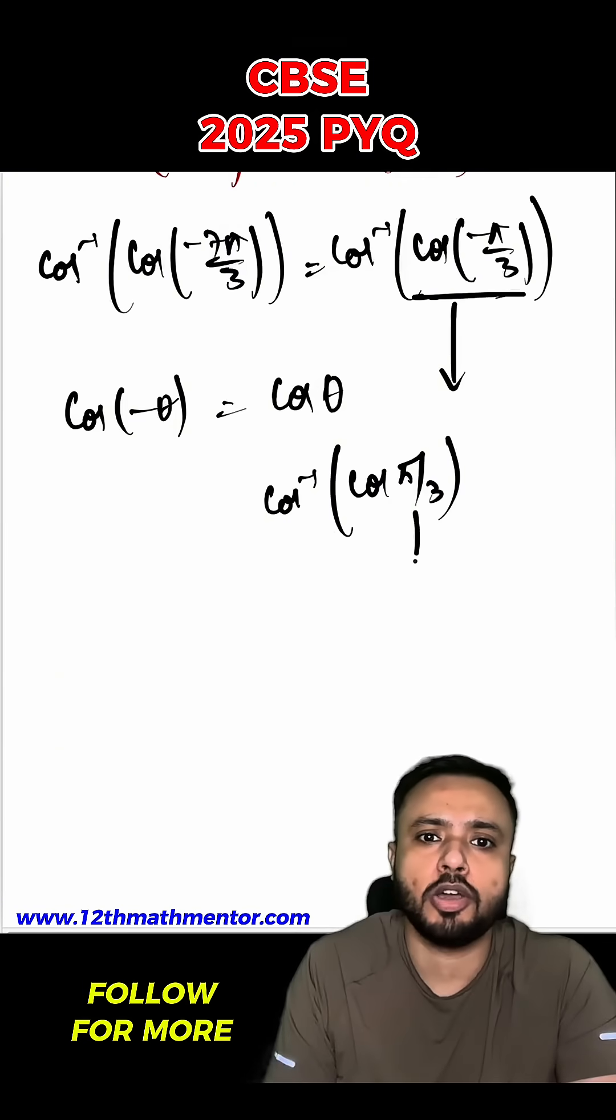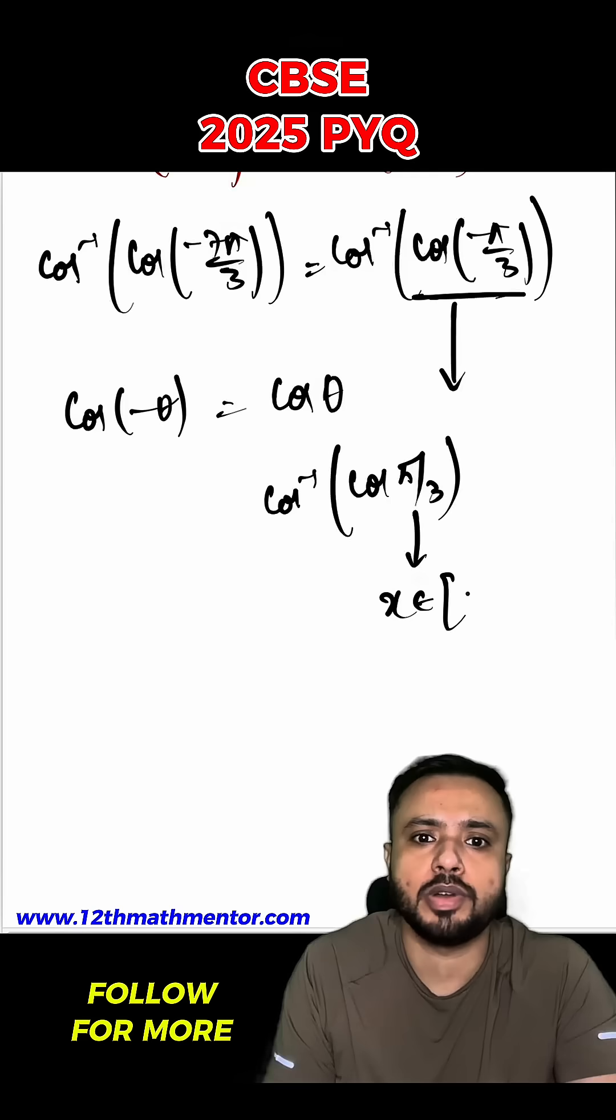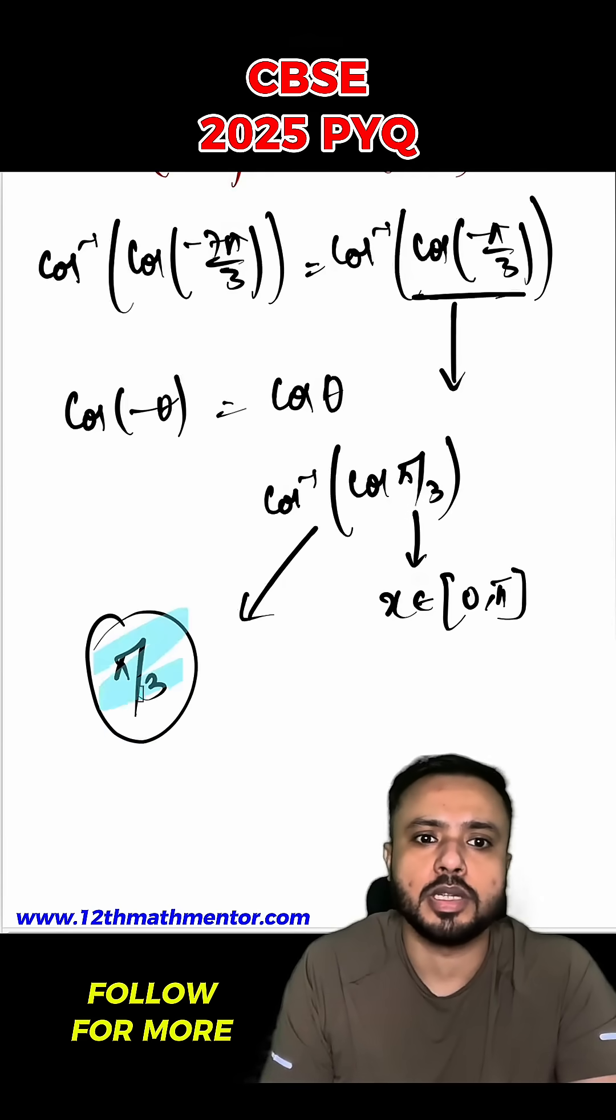Now you can see that this has become in the range of 0 to pi. Hence the answer for this would be pi by 3. This is the desired answer.